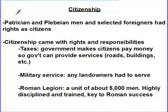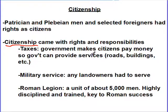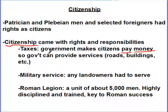Patrician men and plebeian men had rights as citizens, and even select foreigners had rights as citizens. What does being a citizen mean? Citizenship in ancient Rome means you have to pay taxes. A tax is money the government makes citizens pay so that the government can provide services — in America, everyone who has a job pays taxes, and in turn the government builds roads, makes government buildings, and provides education.